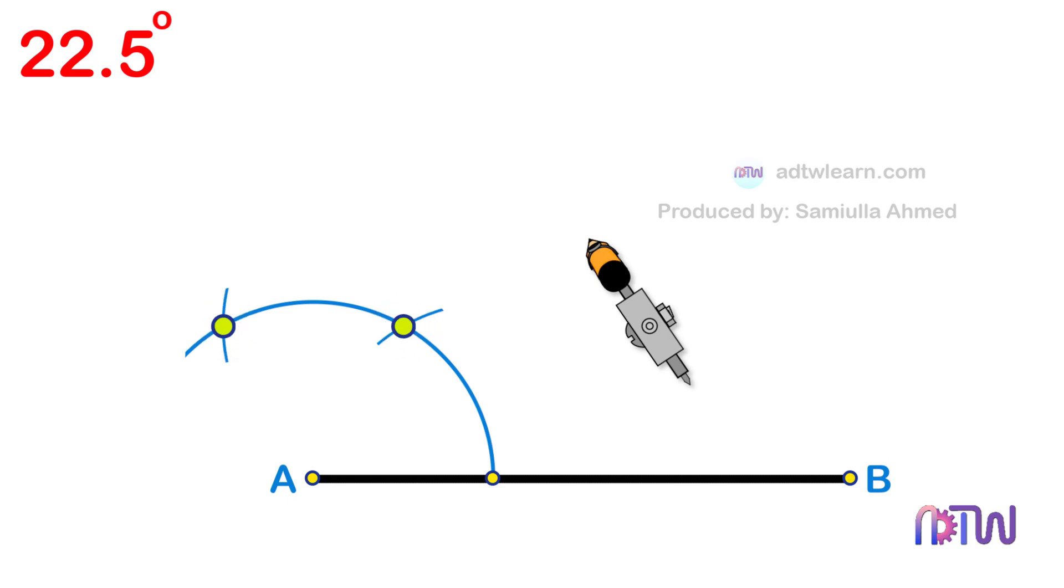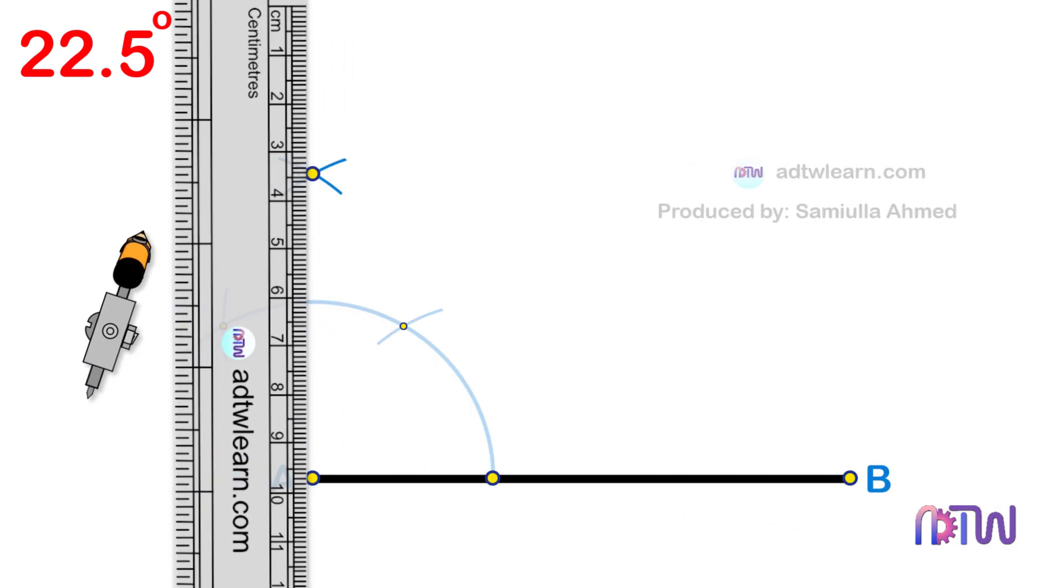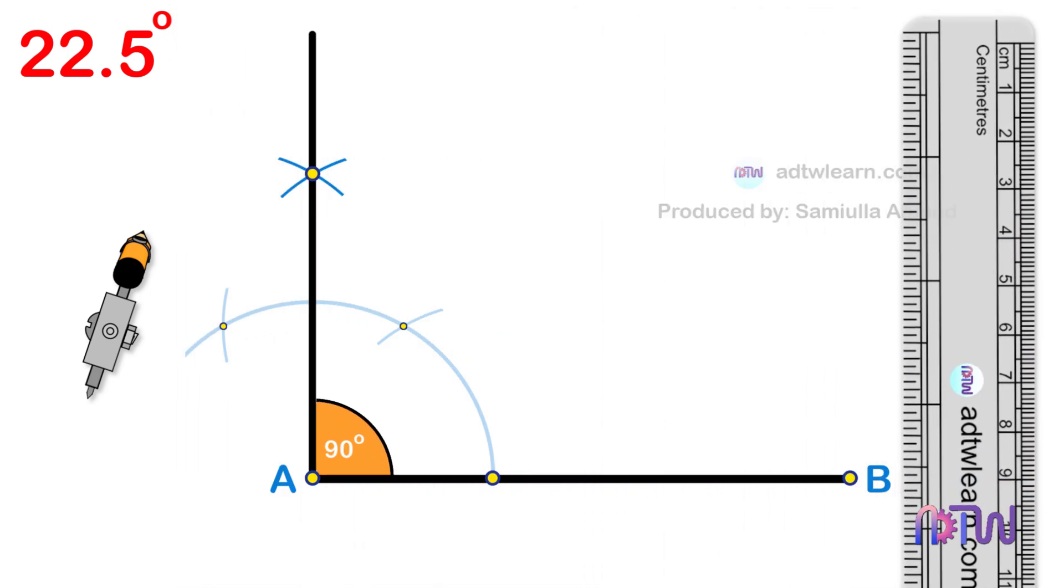Using these points as centers, cut arcs as shown. Draw a line passing through this point. This line will be at 90 degrees.